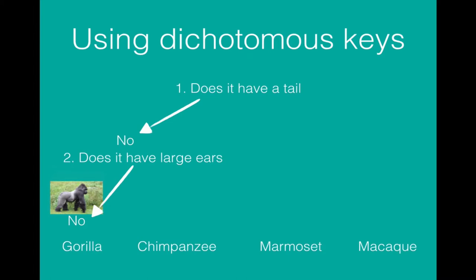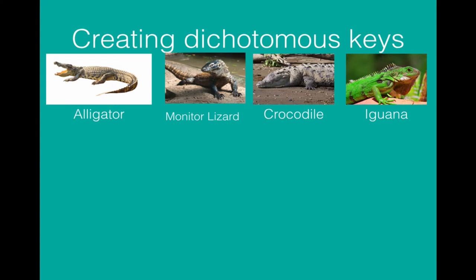Now we may have known beforehand that this is a gorilla but sometimes you come across species that you have never seen before and as a result of using dichotomous keys you can still identify this species. You should be able to make your own dichotomous keys.